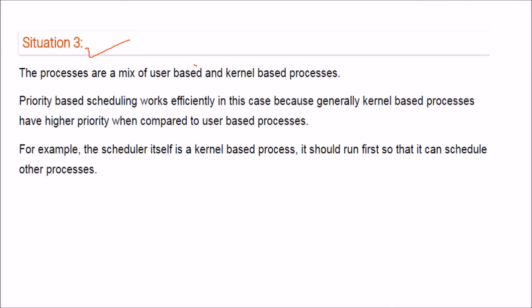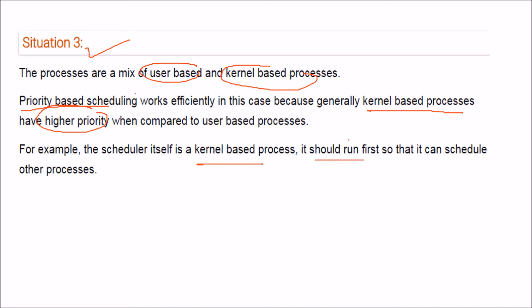Situation 3 — there is a blend of user-based and kernel-based processes. Priority-based scheduling is best here because kernel-based processes have higher priority than user processes. For instance, the scheduler itself is a kernel process and must run first to schedule other processes. This concludes the discussion on scheduling algorithms, covering examples, advantages, disadvantages, and situational guidance.